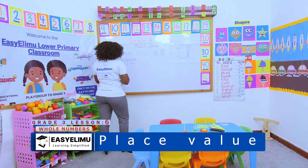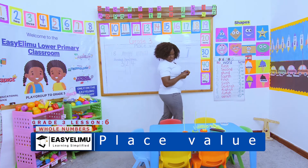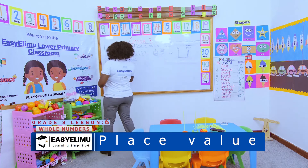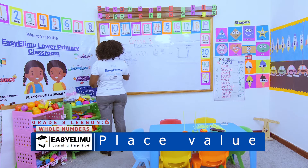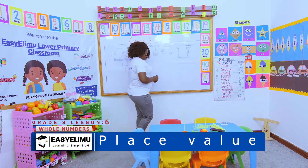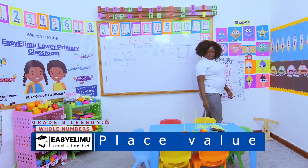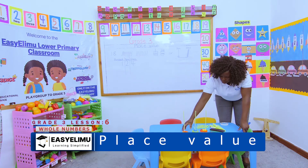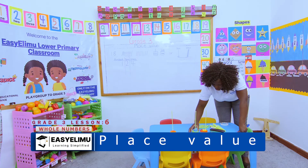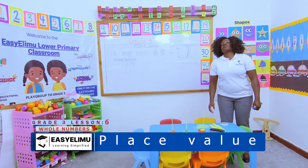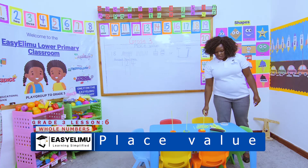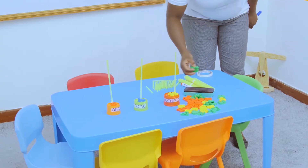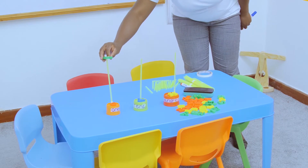I've been told to represent this number using the abacus. I have one column for hundreds, one for tens, and one for ones. So this column represents ones, this one represents tens, and this one represents hundreds. I will take the beads and put them in the ones place value.